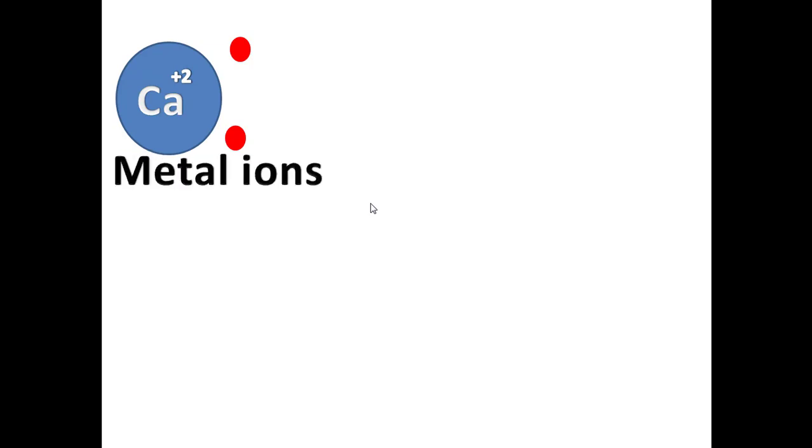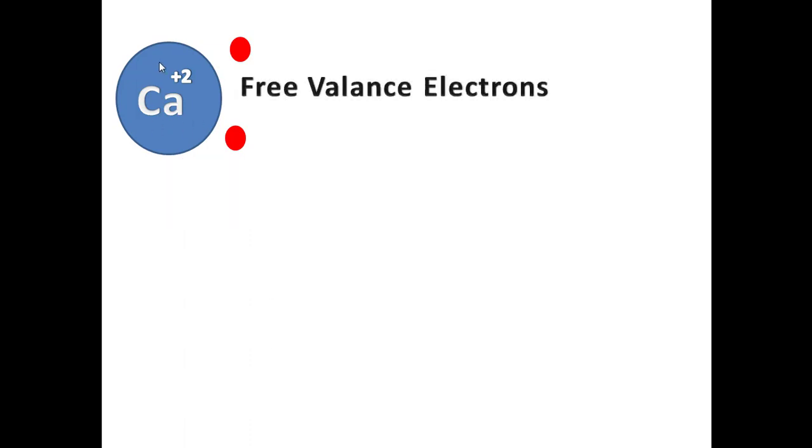As a result of metal ions, which is calcium +2, and valence electrons, which are here, metallic bond takes place.